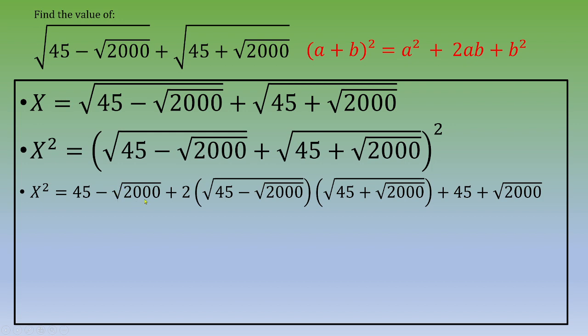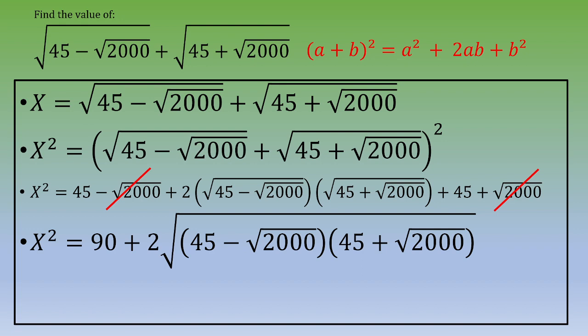You can notice now that you've got on one side minus square root of 2000 and plus square root of 2000, so you can simplify. You end up with 45 plus 45 equals 90 plus 2 times square root of 45 minus square root of 2000 times 45 plus square root of 2000.